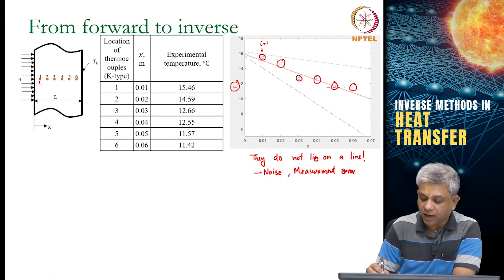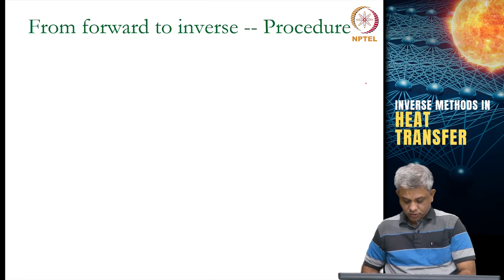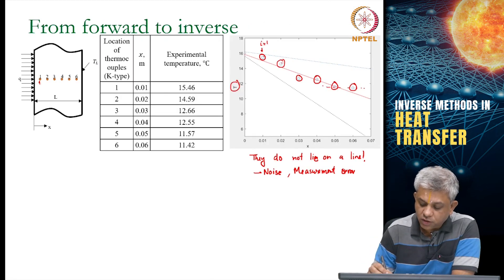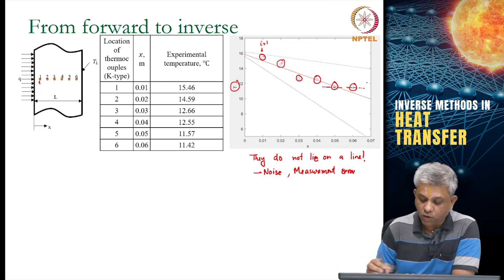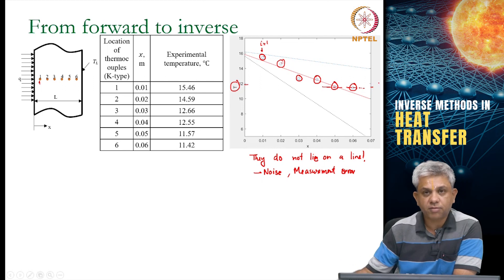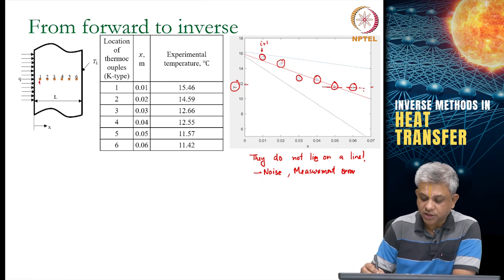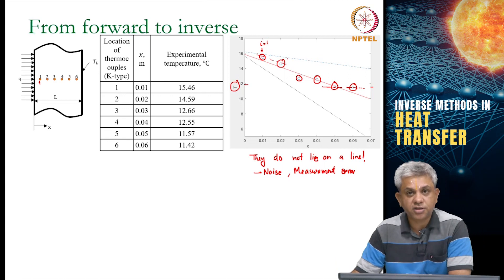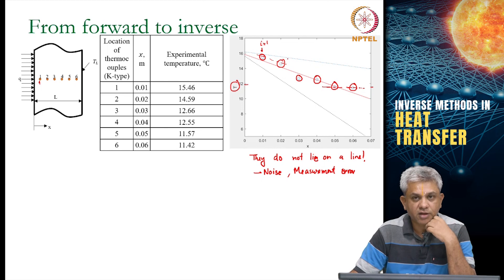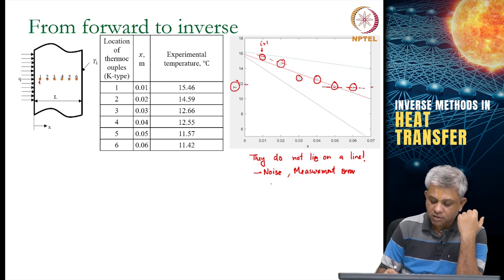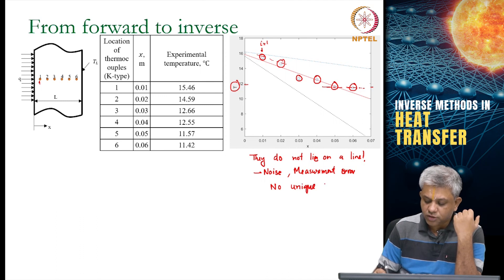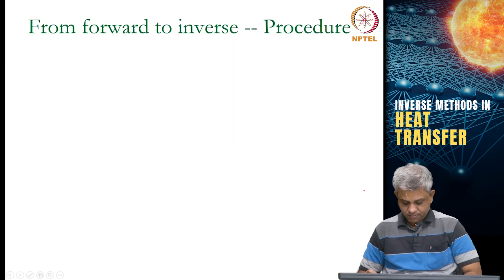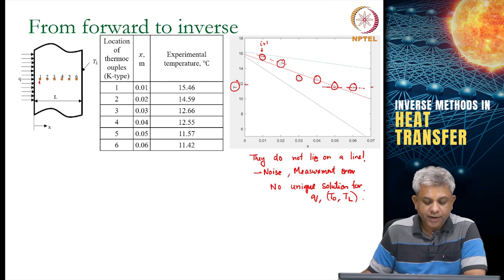It might be due to other genuinely physical effects that we are not accounting for, but what you notice is these points which indicate the temperatures are actually not perfectly within a straight line. Suppose you try to put a line through these two points and try to predict what T0 and TL are—that will give you one prediction. If you draw this line it will give you some other prediction. You see now you have a problem of uniqueness as is the case with inverse problems. You do not have a unique solution for either Q or for T0 and TL.